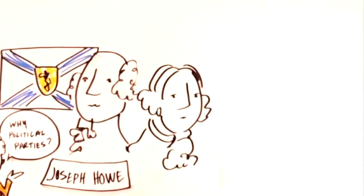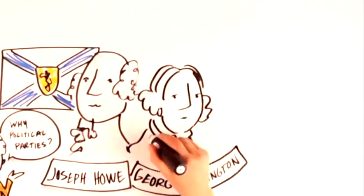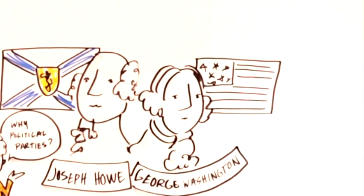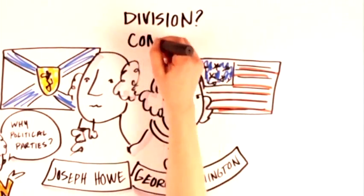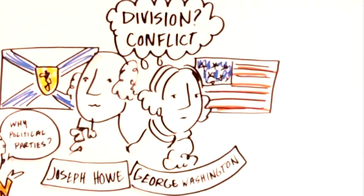George Washington, the first president of the United States, thought so too. Both of these guys worried that political parties would cause division and conflict among groups, and that this could impede free thought and discussion on important issues.